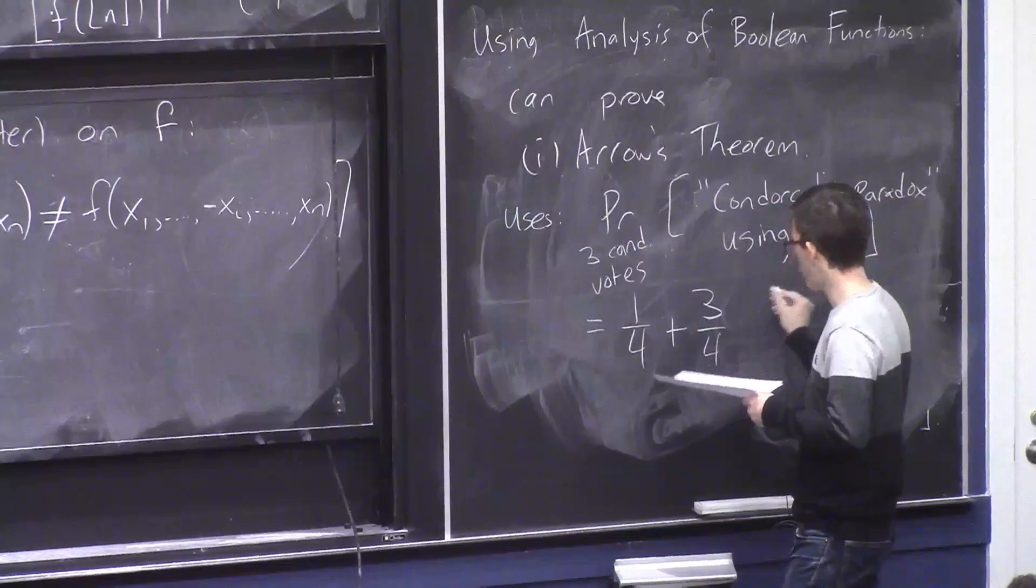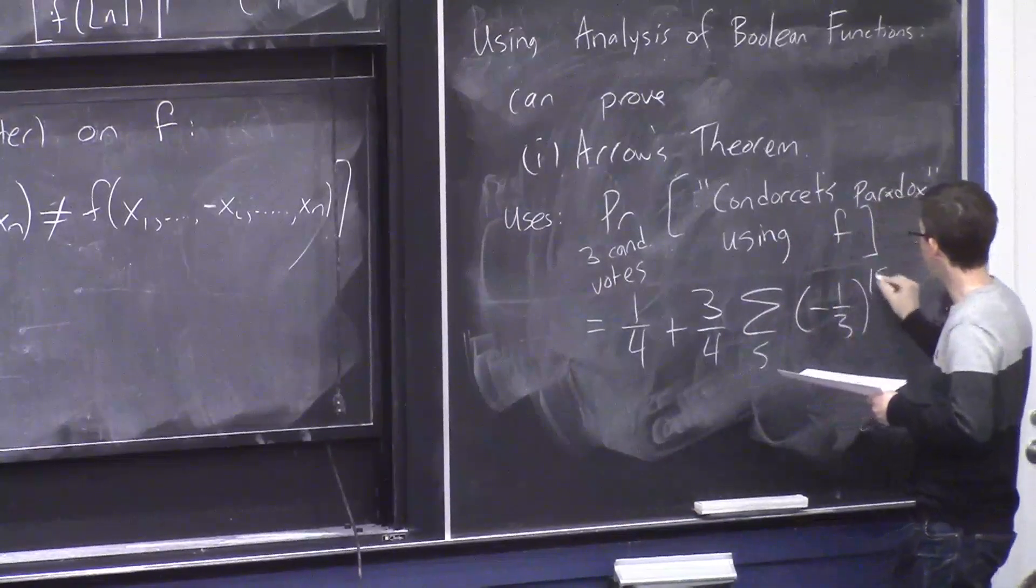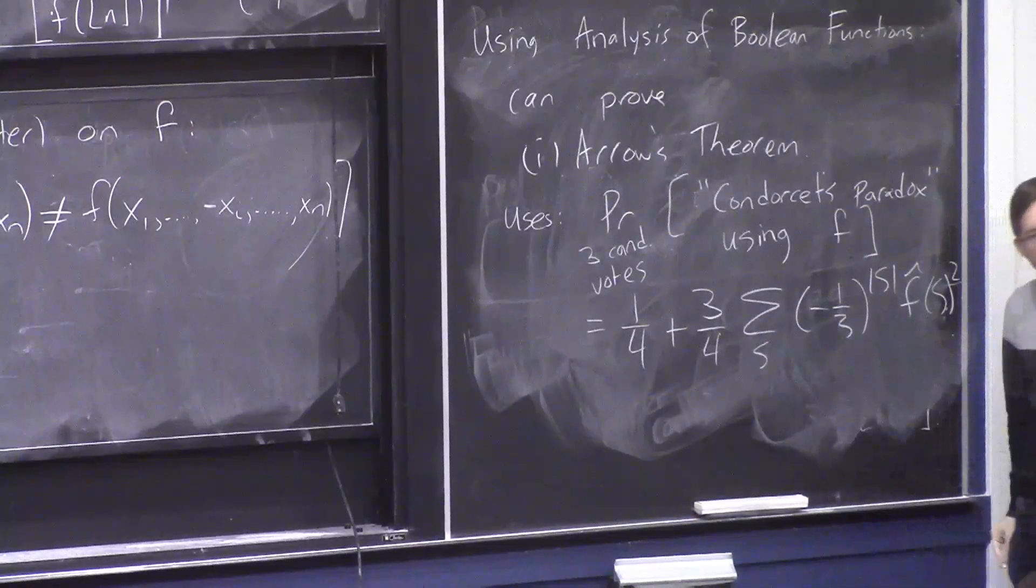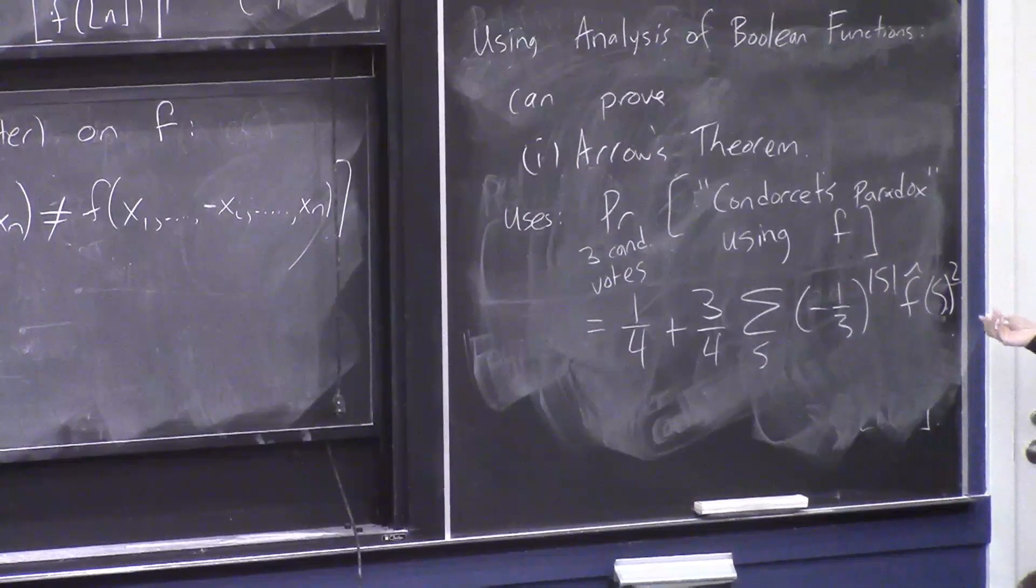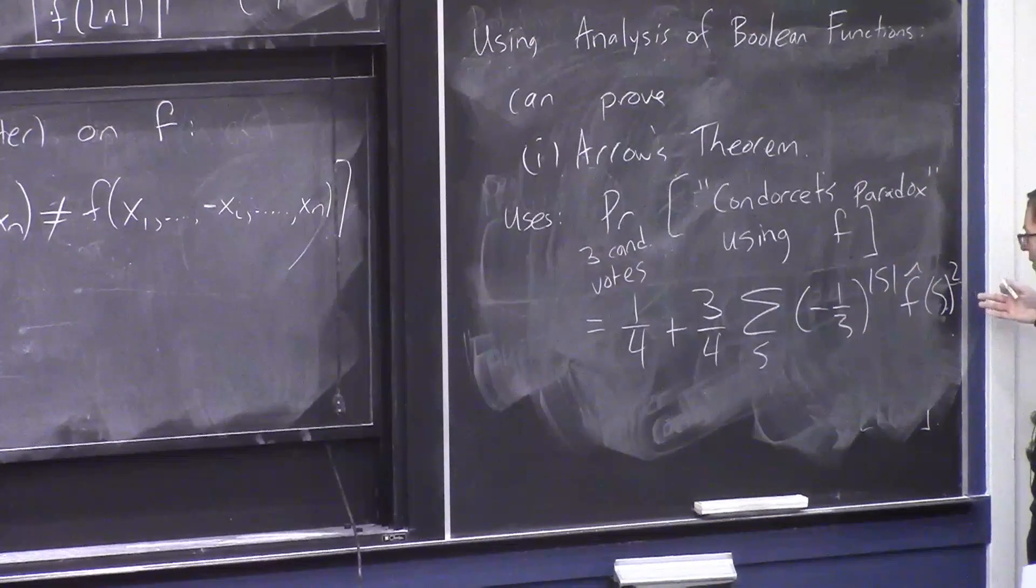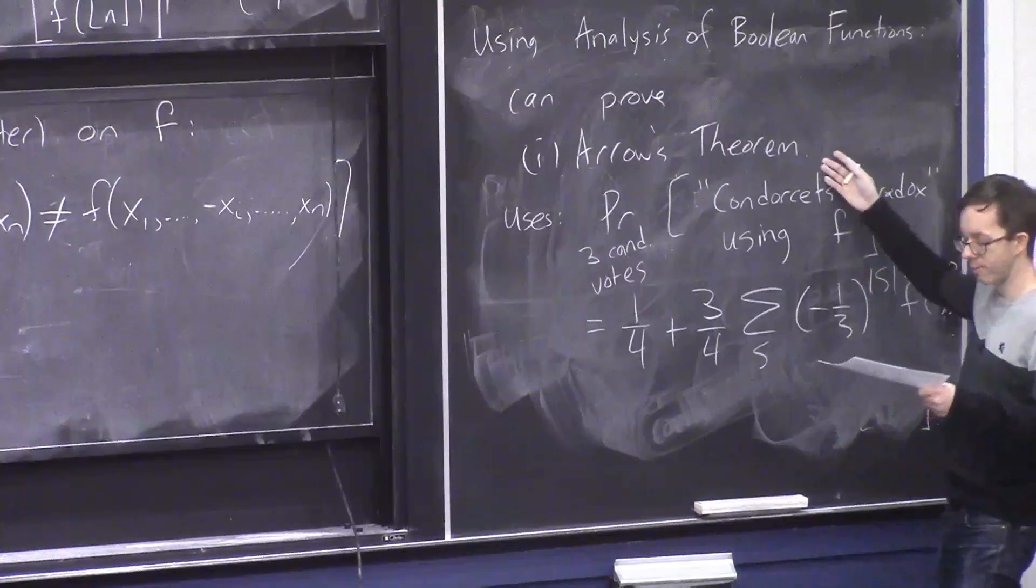You can ask what's the probability of this paradox occurring if you use a Boolean function F? And again, it's a Fourier formula: one-quarter plus three-quarters sum over S, negative one-third to cardinality of S, F-hat S squared. You can only put it out there because it's kind of cool, right? This interesting thing about voting has this very elegant formula involving the Fourier coefficients. And this is basically what you use to prove Arrow's theorem.